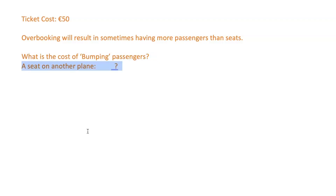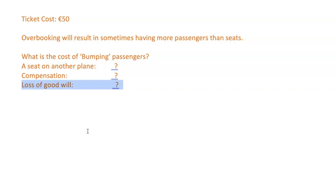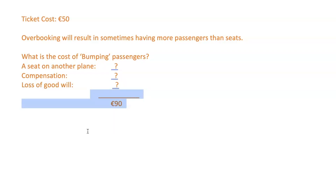We have to assess what the cost is of bumping a passenger, made up of lots of different factors. For example: a seat on the next flight (with your airline or another), compensation such as hotel accommodation, food vouchers, or a monetary gift, and third — more intangible — a loss of goodwill. A bumped passenger won't be happy and may never fly with you again, and may give bad word of mouth. For this question, the airline have assessed all of those costs to sum to an aggregate of 90 euro.